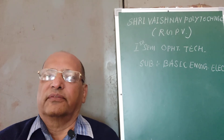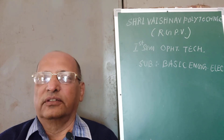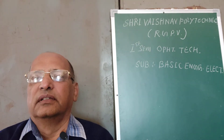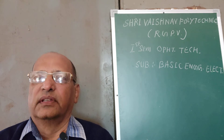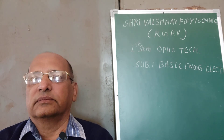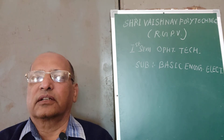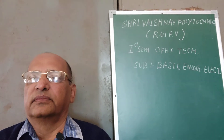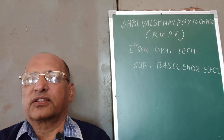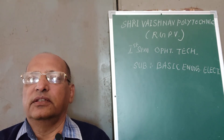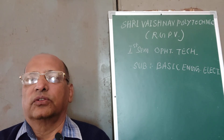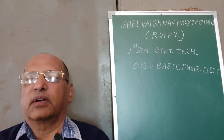Good morning to all students of first year of ophthalmic technology. This is one subject in semester one: basic engineering, electrical and mechanical. I will take the electrical part, which according to the question paper will come as part B, electrical engineering. Each section A and B consists of 50 marks each, so total marks will be 100.